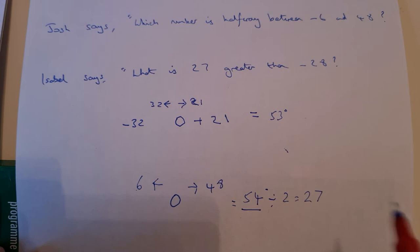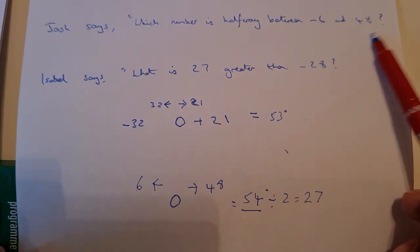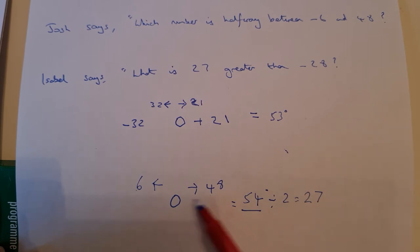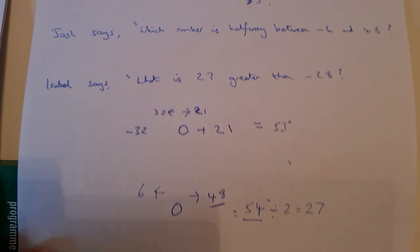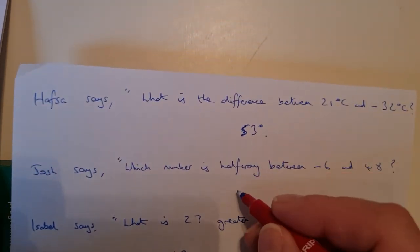So what I need to do now is look at the positive number. I'm going to look at 48. And I want to be halfway between minus 6 and 48, so I need to count 27 backwards from 48. So basically, it's 48 take away 27. And on that one, I get 21 degrees.